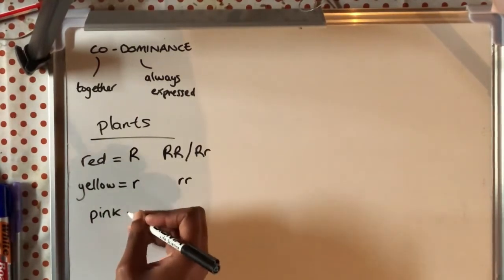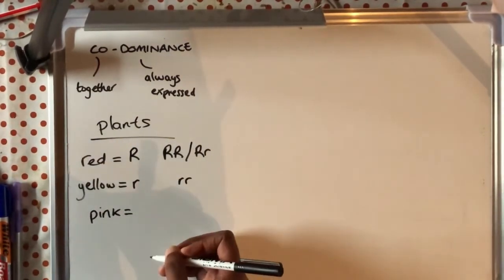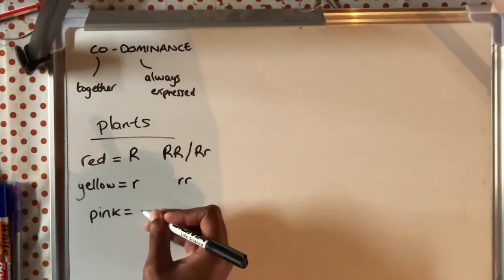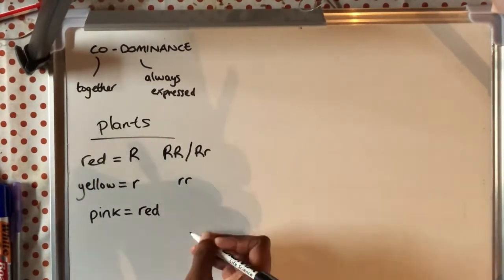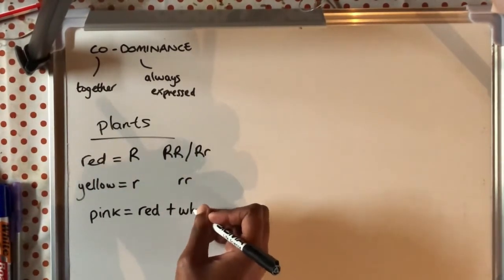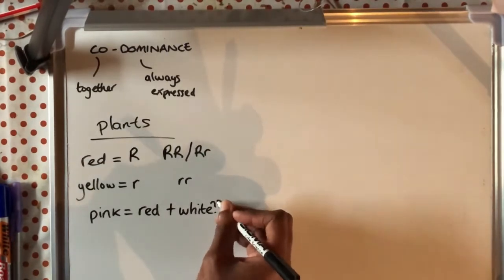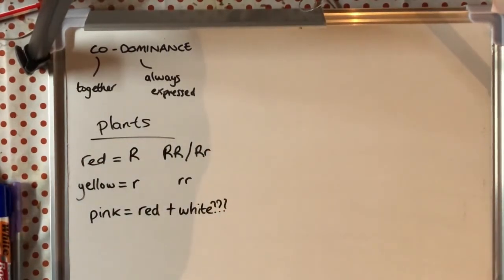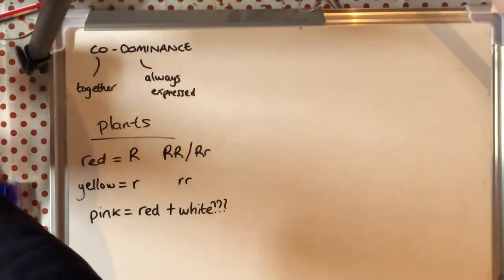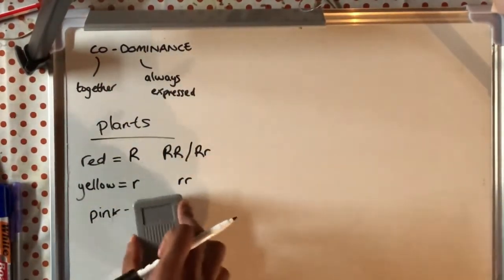Now let's say for example that there is now a different colored petal that you see and it is pink. How can that be? It can't be a combination of red and yellow so it must be a combination of two other things. So it could be red and white for example. So let's say that it's a combination of red and white to give you pink.